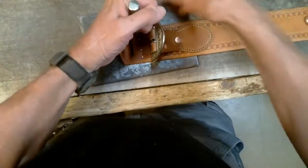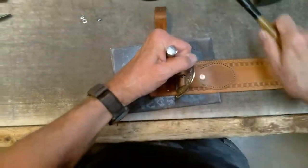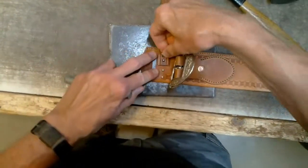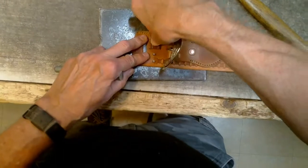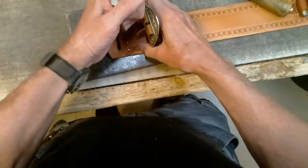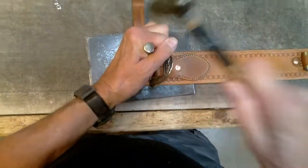The double capped rivets are inserted through the front of the belt from inside the money belt. With the belt on a hard smooth surface, the rivets can be set without marring the back of the money belt.